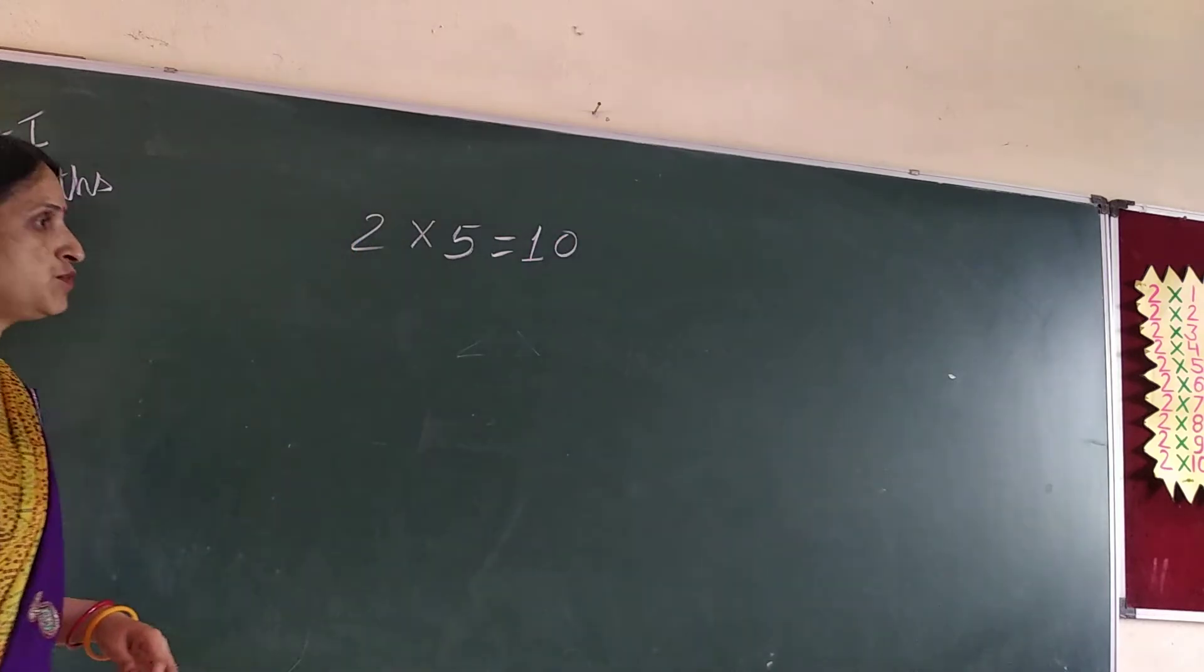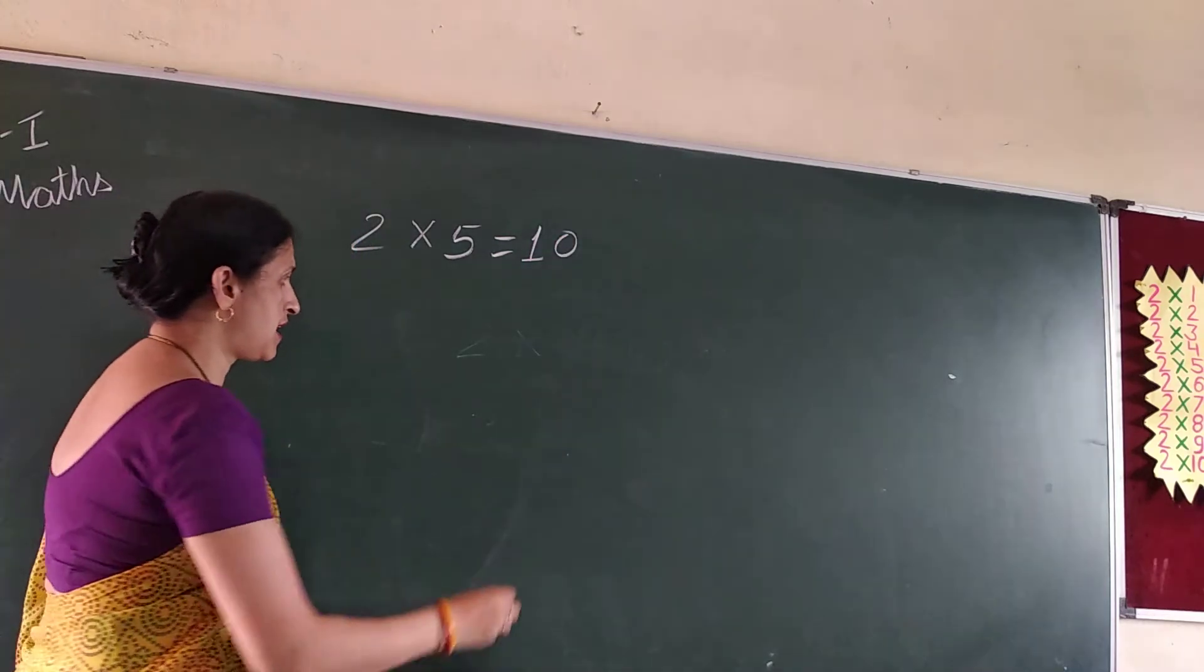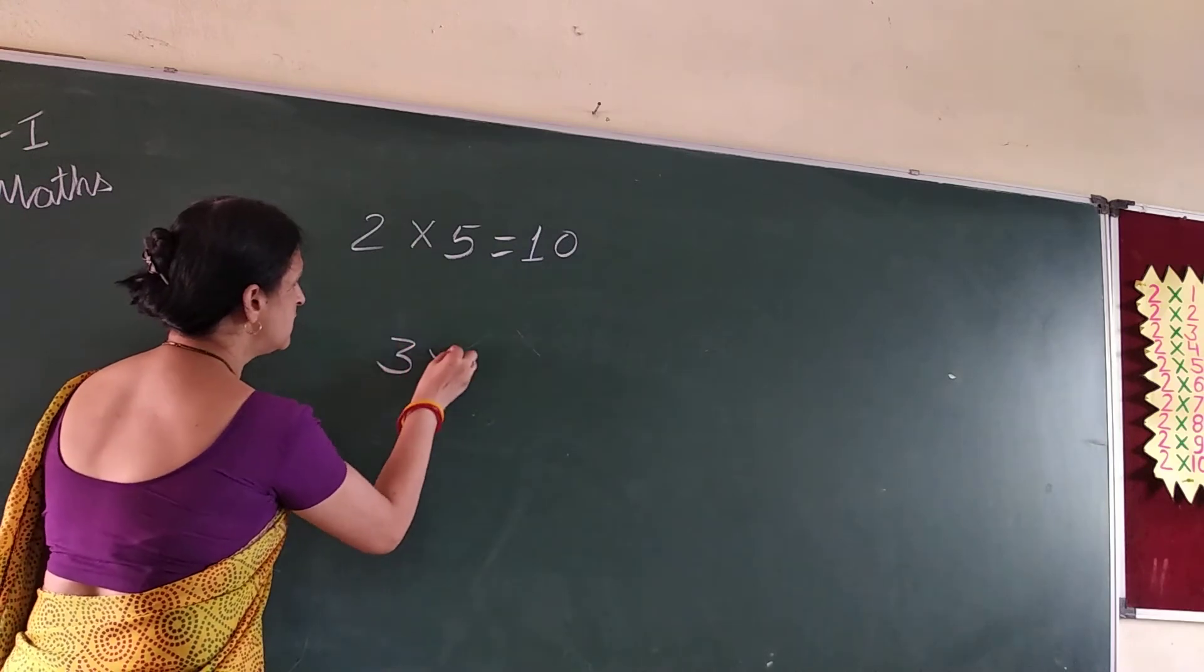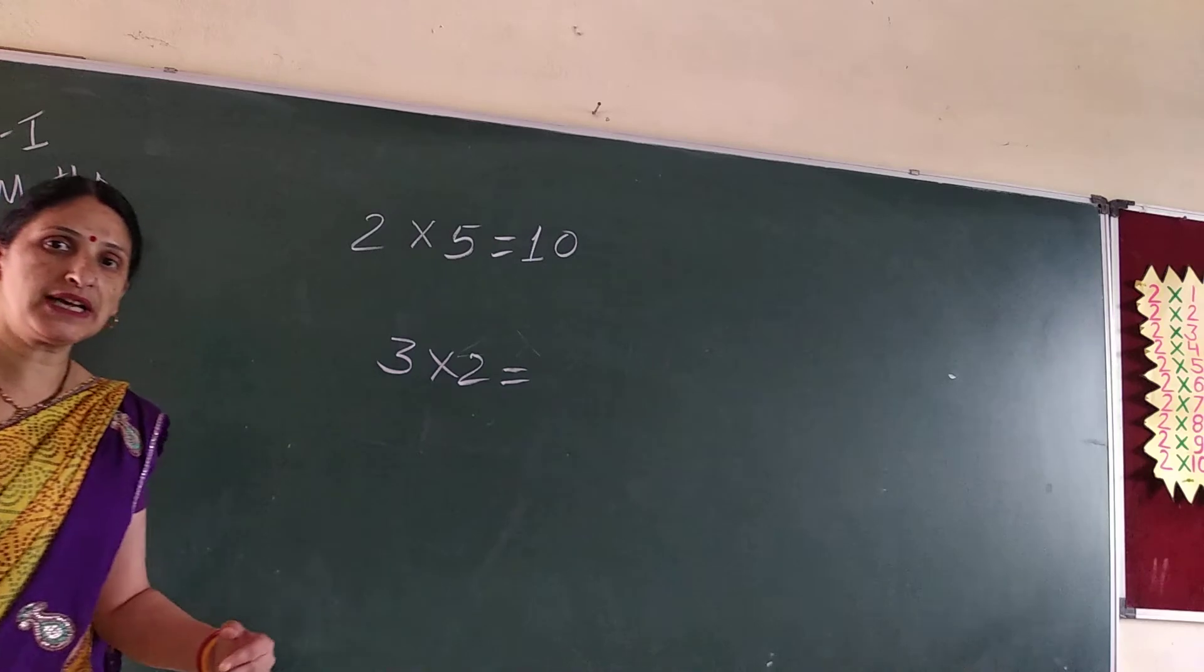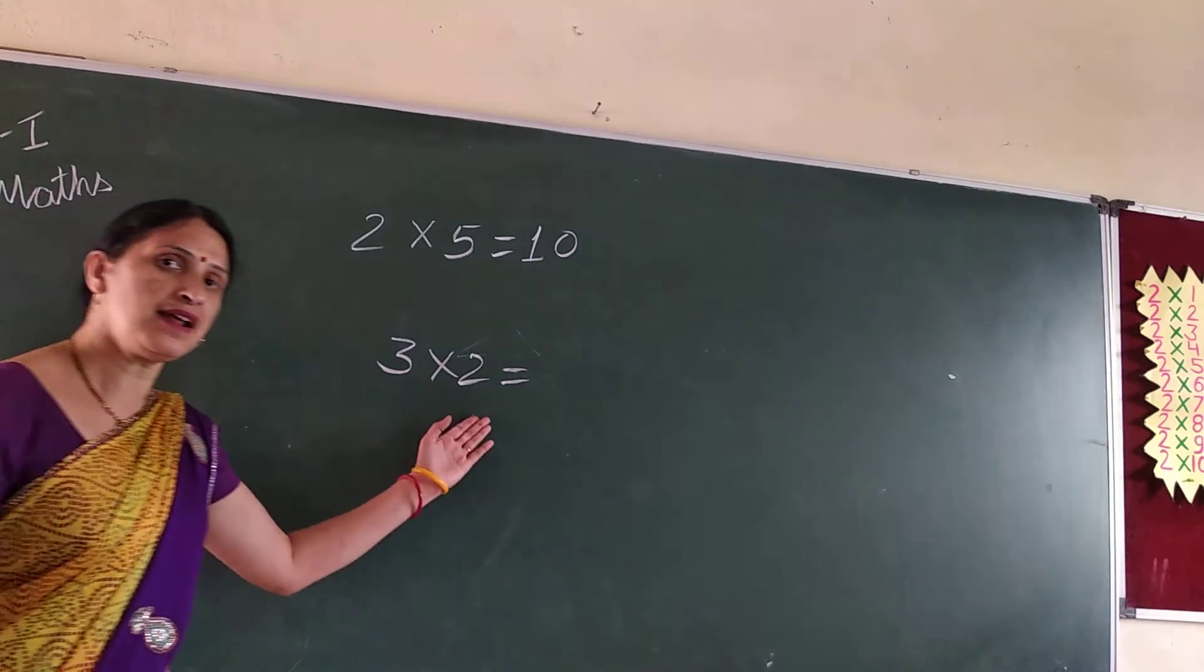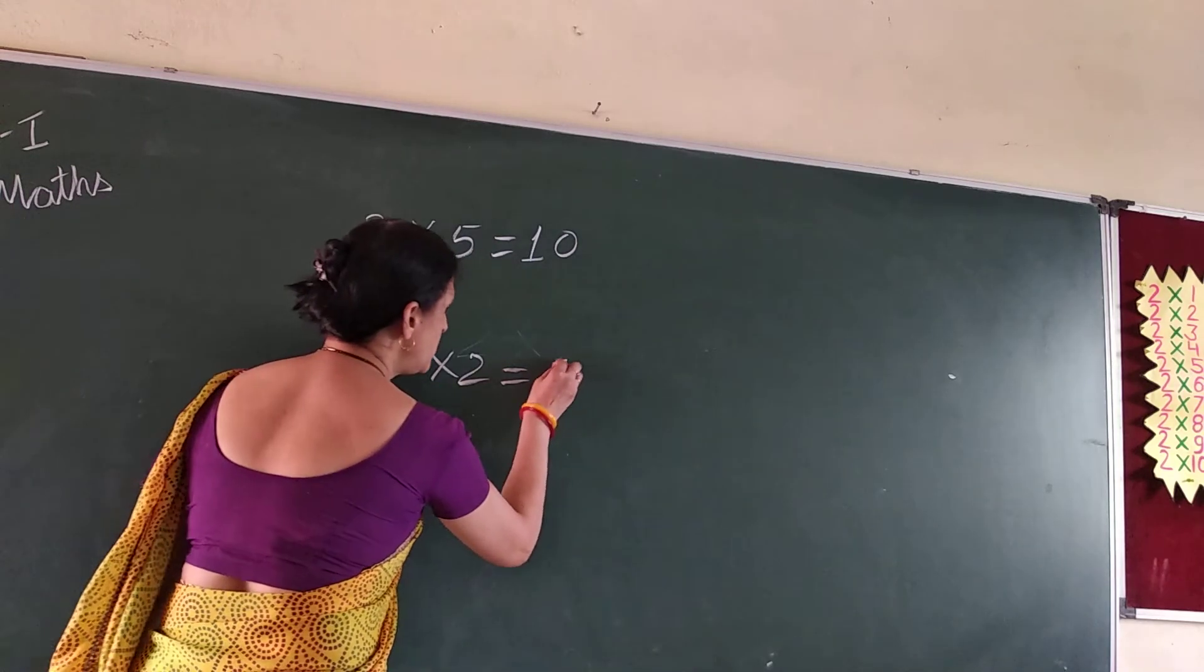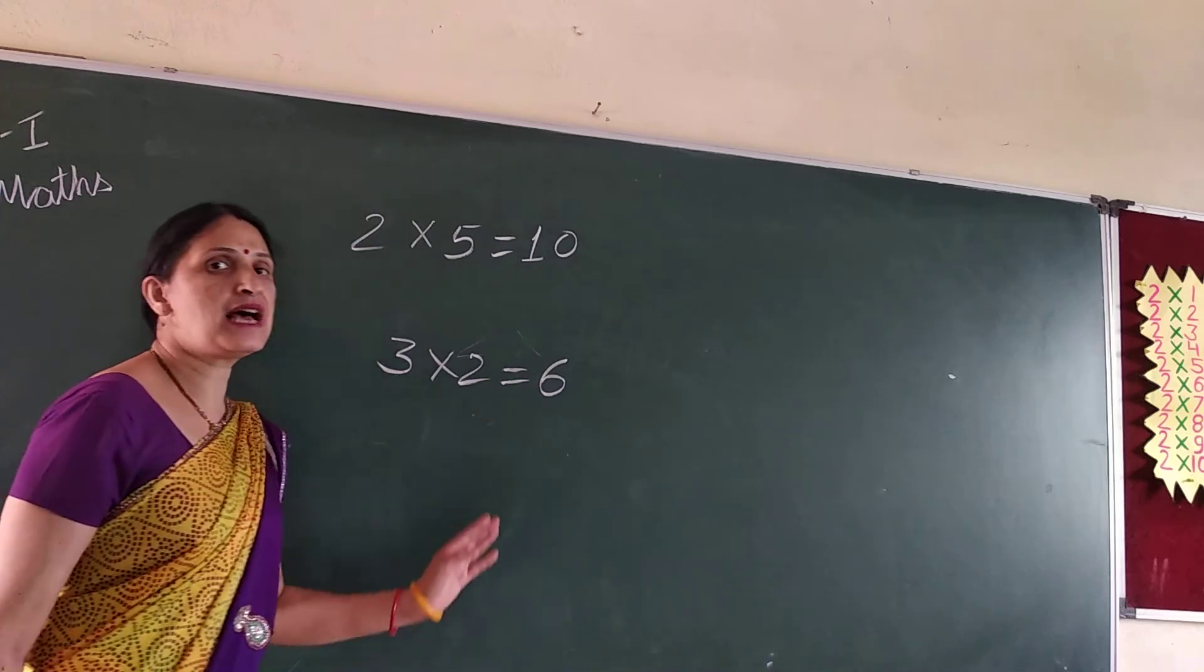Second question here, 3 2's are. 3 2's are. So how do you recite it? 3 1's are 3, 3 2's are 6. You can recite it in this way, okay?